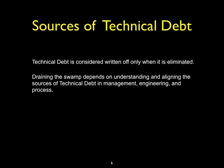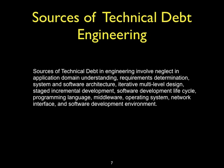Draining the swamp depends on understanding and aligning the sources of technical debt in management, engineering, and process. Sources of technical debt in engineering involve neglect in application domain understanding, requirements determination, system and software architecture, iterative multi-level design, staged incremental development, and software development life cycle.